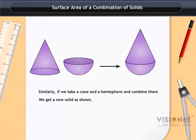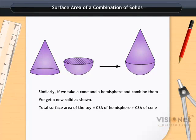And if we want to find how much paint we would require to color the surface of this toy, then we would need to know the surface area of the toy, which consists of the CSA of the hemisphere and the CSA of the cone. The total surface area of the toy is equal to CSA of the hemisphere plus CSA of the cone.